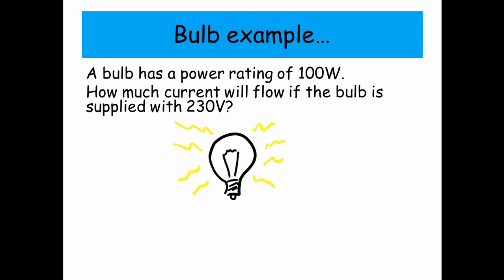Bulb example. A bulb has a power rating of 100 watts. How much current will flow if the bulb is supplied with 230 volts?